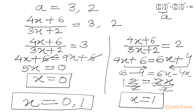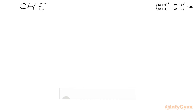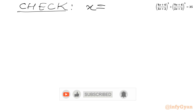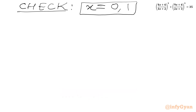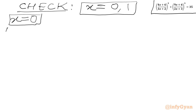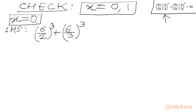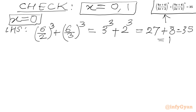Now we will verify both results. Our solutions are 0 and 1. For x equal to 0: substituting into the LHS gives (6 over 2) cube plus (6 over 3) cube, which is 3 cube plus 2 cube, equal to 27 plus 8 equal to 35. This matches our RHS, so x equal to 0 is a verified solution.